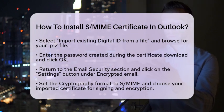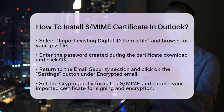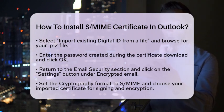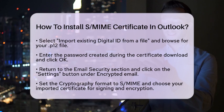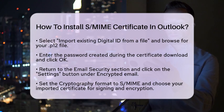After successfully importing the certificate, return to the Email Security section. Here you will see a Settings button under Encrypted Email. Click on that button to configure your S/MIME settings. Make sure the cryptography format is set to S/MIME, and select your newly imported certificate as the Signing and Encryption Certificate.